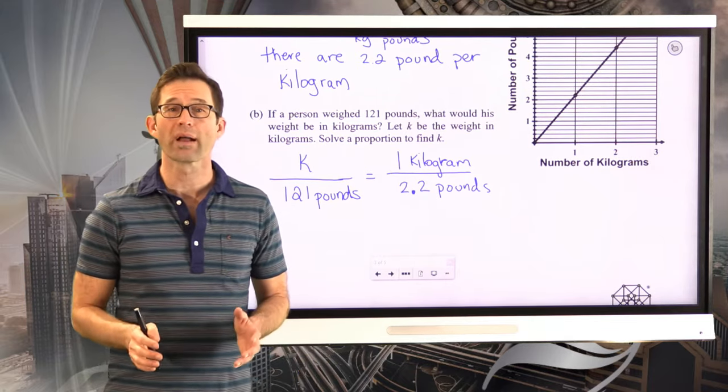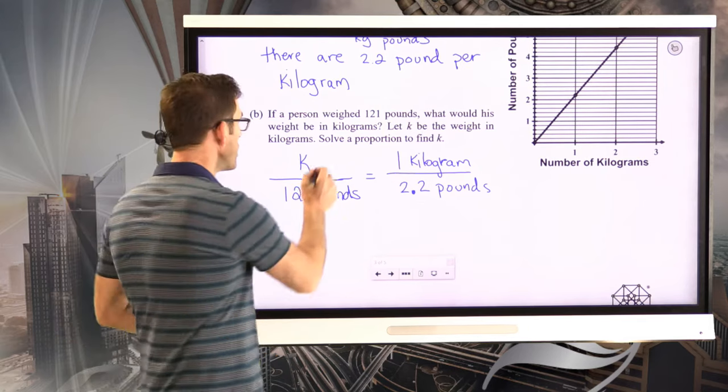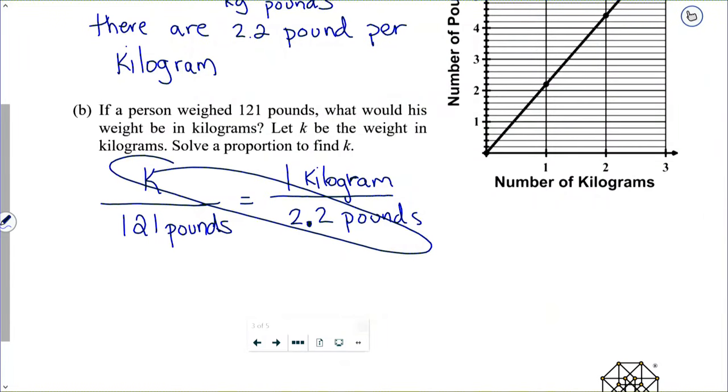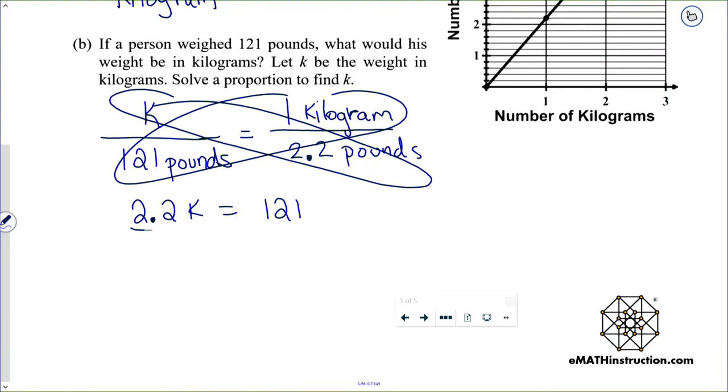Now, how should we solve this? Well, we could certainly go back to cross multiplication. That is simple enough. We could cross multiply here and cross multiply here. And we're going to drop the units for just the time being. We'd have 2.2 times K is equal to 1 times 121. But that's, of course, just 121. Now comes kind of the ugliness, especially if you're doing this without a calculator. We divide 121 by 2.2. Again, without a calculator, we could certainly do this longhand. We would just have to do our decimal movement in the 2.2 to make it a 22.